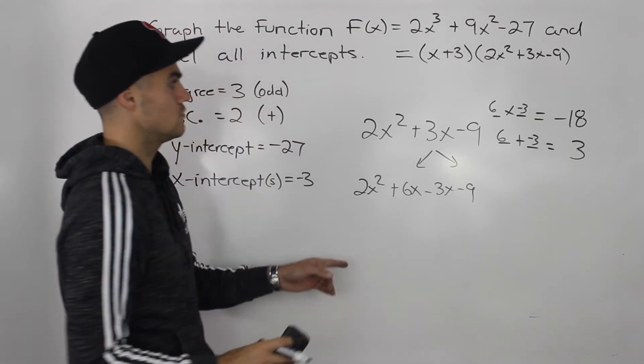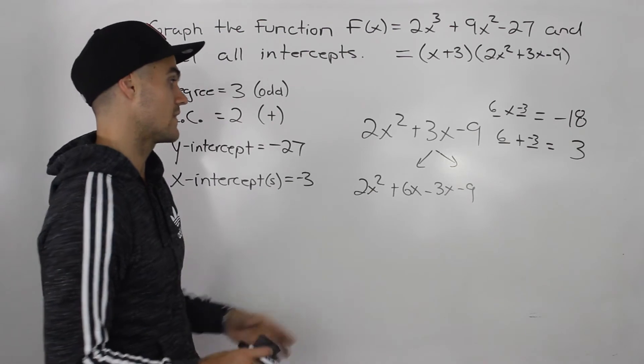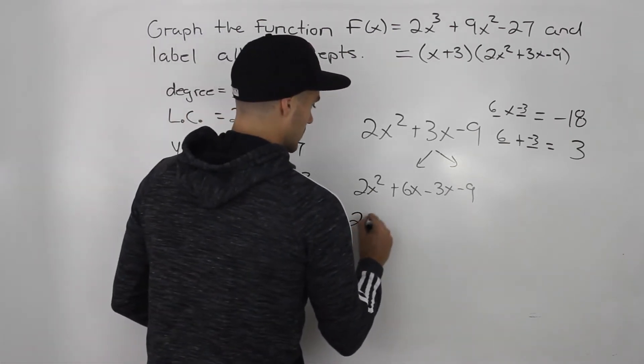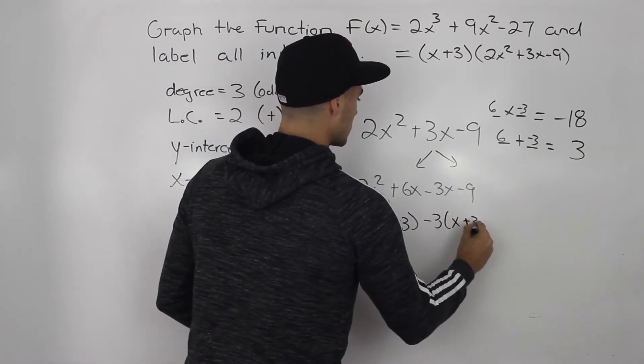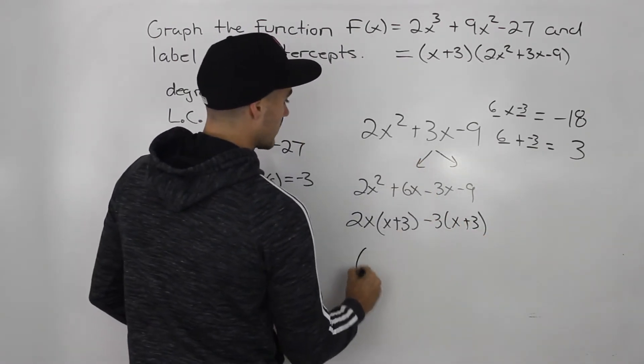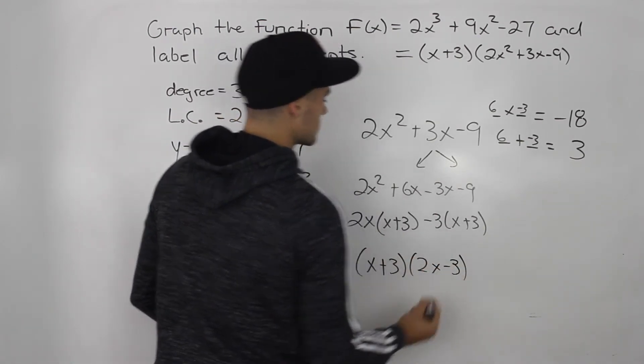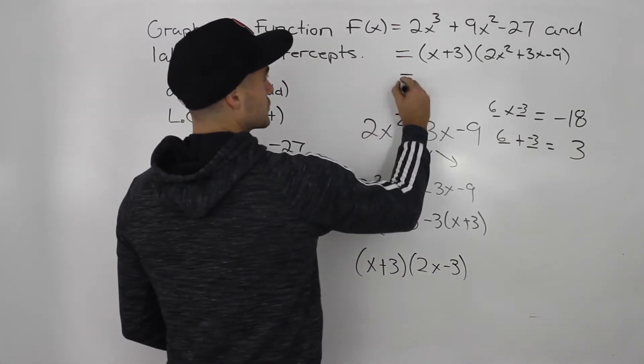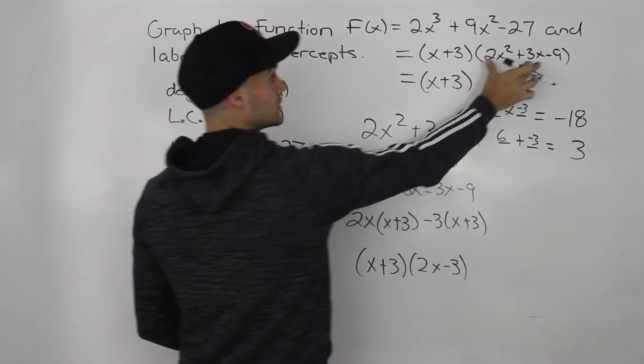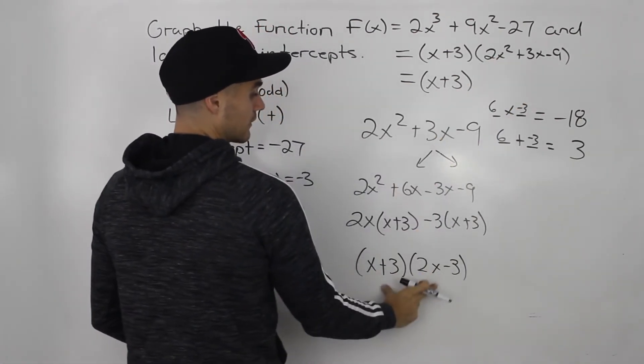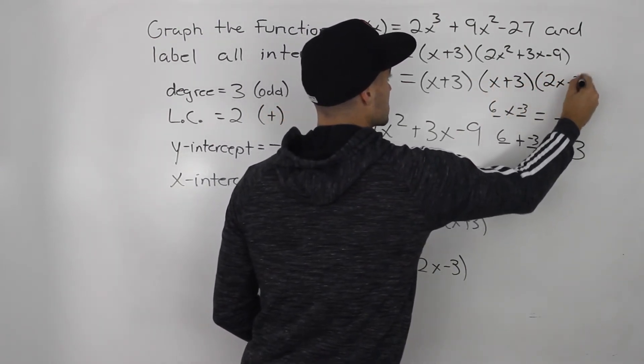Now just a heads up that you may have a different way to factor this. This is the way that I do it. But whatever works, as long as you're getting the correct answer, basically this quadratic will factor into x + 3, 2x - 3. So going back to our original polynomial, we have x + 3, which we started with at the beginning, and now we took this quadratic and factored it into these two factors, x + 3 and then 2x - 3.